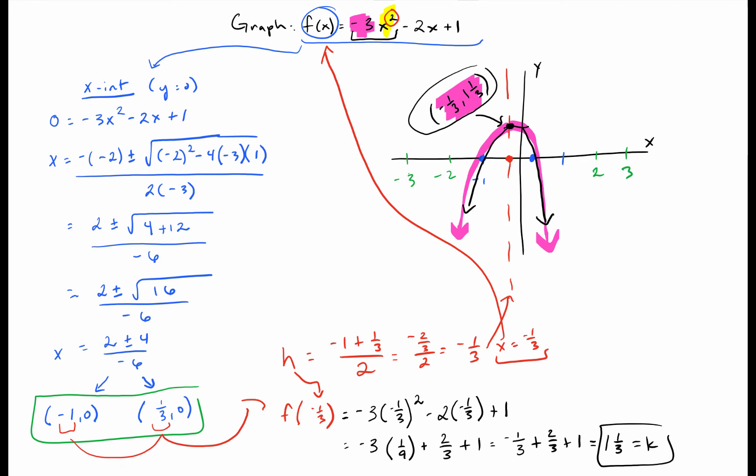In the next video we'll talk about how we can formalize this and memorize some theorems that allow us to find the vertex even if there are no x-intercepts. Because obviously we could have a graph that looks like this, in which case this method really isn't going to work so well.